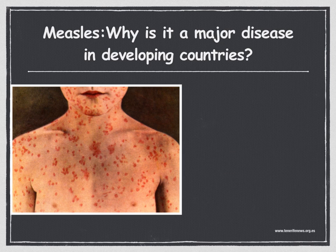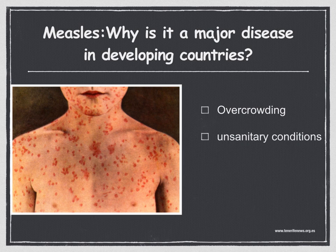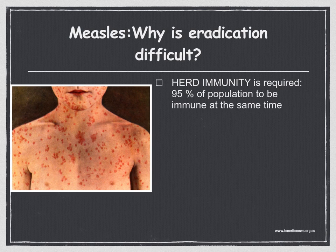Why is tuberculosis a major disease in developing countries? Reasons include overcrowding, unsanitary conditions, malnourishment and high birth rate. As for why eradicating measles is difficult: to eradicate measles effectively, it is necessary to ensure that almost all of the population — at least 95% — is immune at the same time. This is herd immunity; it interrupts transmission and prevents susceptible individuals from acquiring the disease. Since the measles vaccine is only 95% effective, virtually everyone must be immune at one time to eradicate the disease.